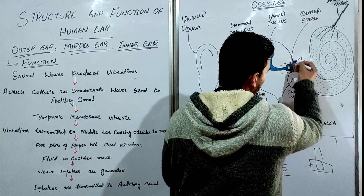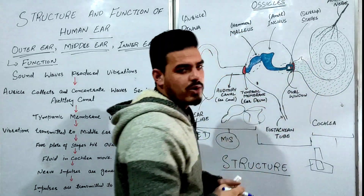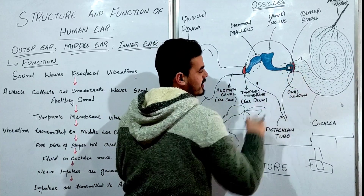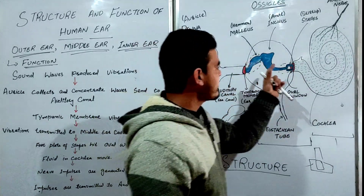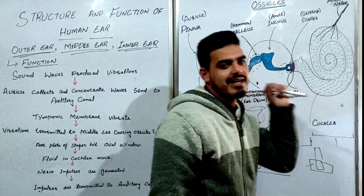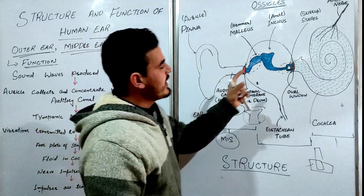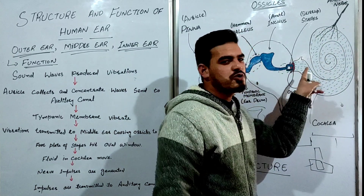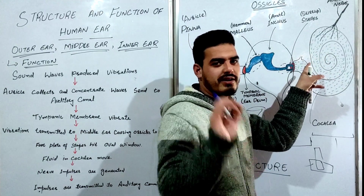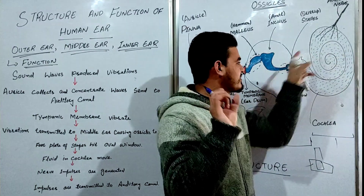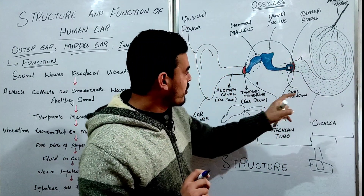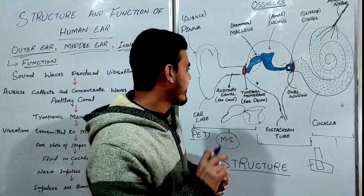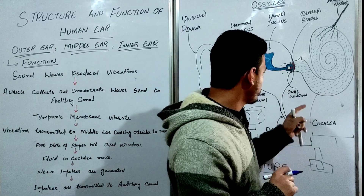The middle ear also has another part, which is the Eustachian tube; this tube goes toward our nose. After the middle ear, we have the oval window — marked here in red — and beyond that begins the inner ear.